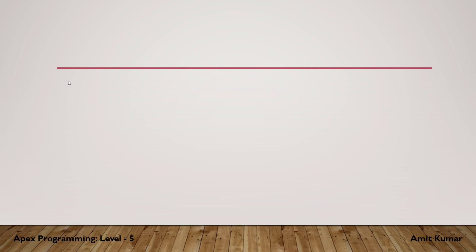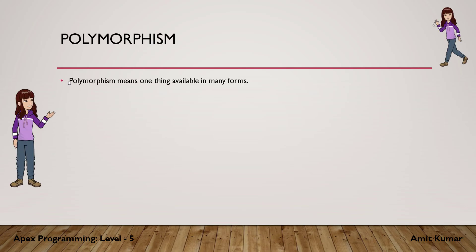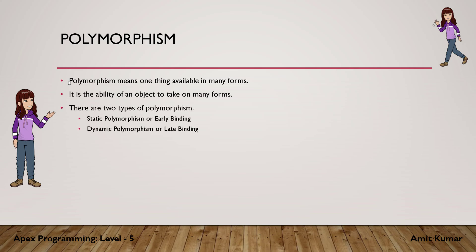Hey guys, I am Amit Kumar and welcome to this video in which we are going to talk about polymorphism. Polymorphism means one thing available in many forms — it is the ability of an object to take on many forms. There are two types of polymorphism: static polymorphism or early binding, and dynamic polymorphism or late binding.